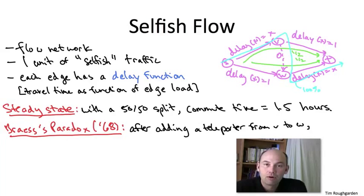So now, despite the fact we've made the network intuitively only better, in the unique new steady state, assuming everybody selfishly chooses their minimum travel time path, the commute time has actually gotten worse. It's jumped from an hour and a half for everybody to two hours for everybody. That is Braess's paradox. Improvements to networks where you have selfish users can make the outcome worse for everybody.